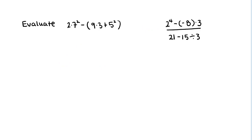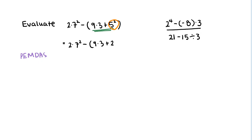Here are two more examples — try them yourself first. In the first example, writing out PEMDAS, we perform the parentheses first to give us 2 times 7 squared, minus the result of the parentheses. Inside those parentheses, we still follow order of operations: we have multiplication, addition, and exponentiation. What happens first is the exponentiation — before the multiplication or the addition — so we evaluate 5 squared as 25.